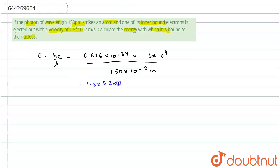This equals 1.3252 into 10 power minus 15 joules, or I can write it as 13.252 into 10 power minus 16 joules.